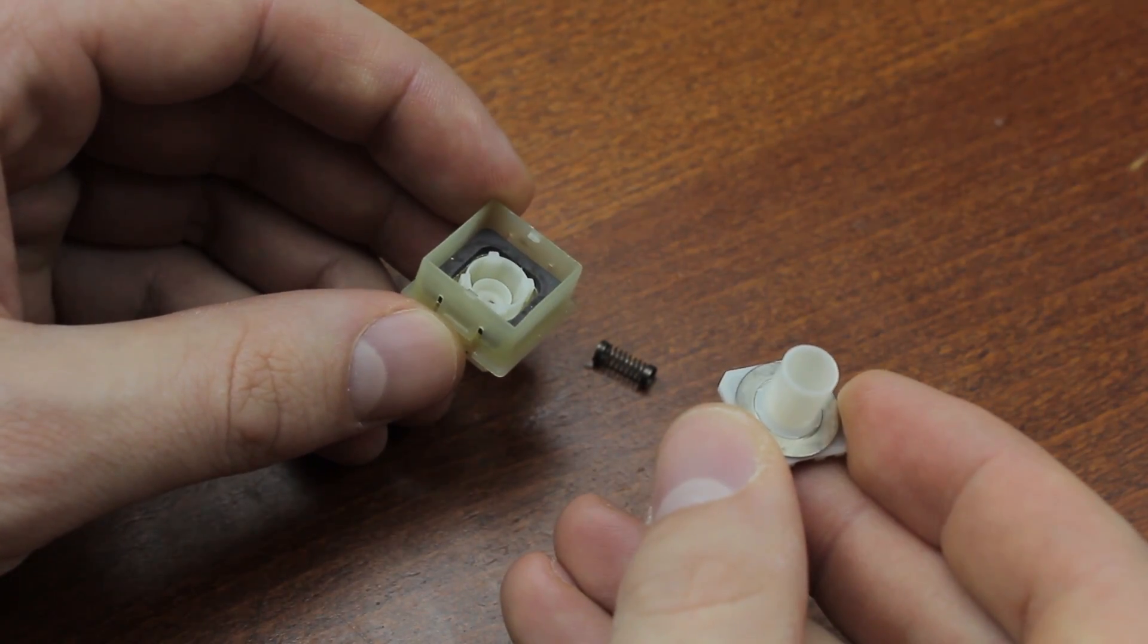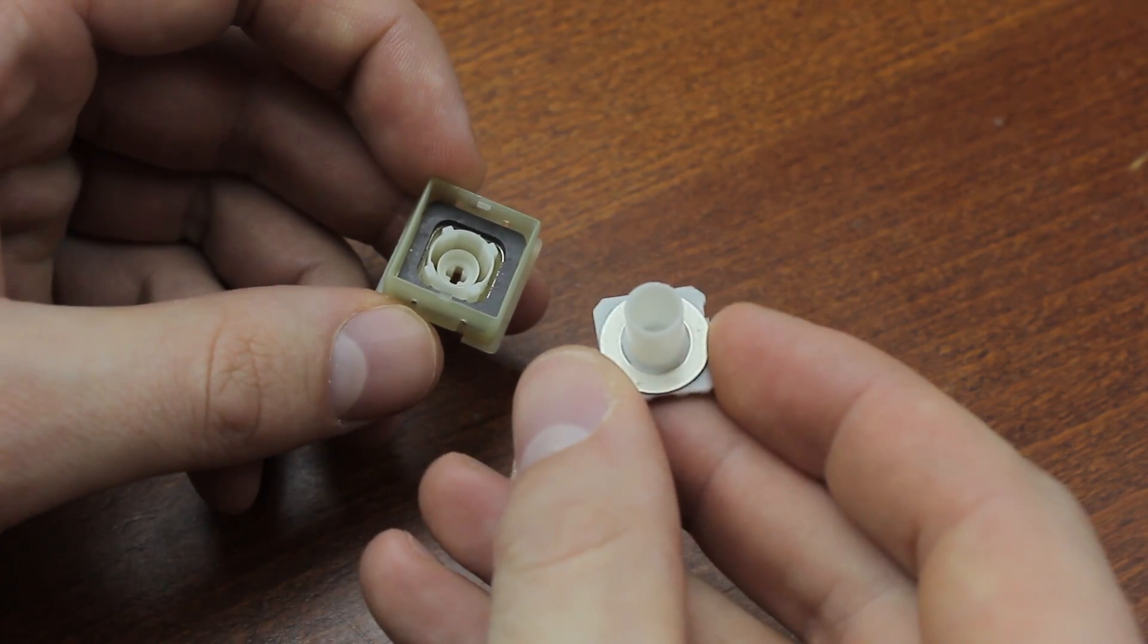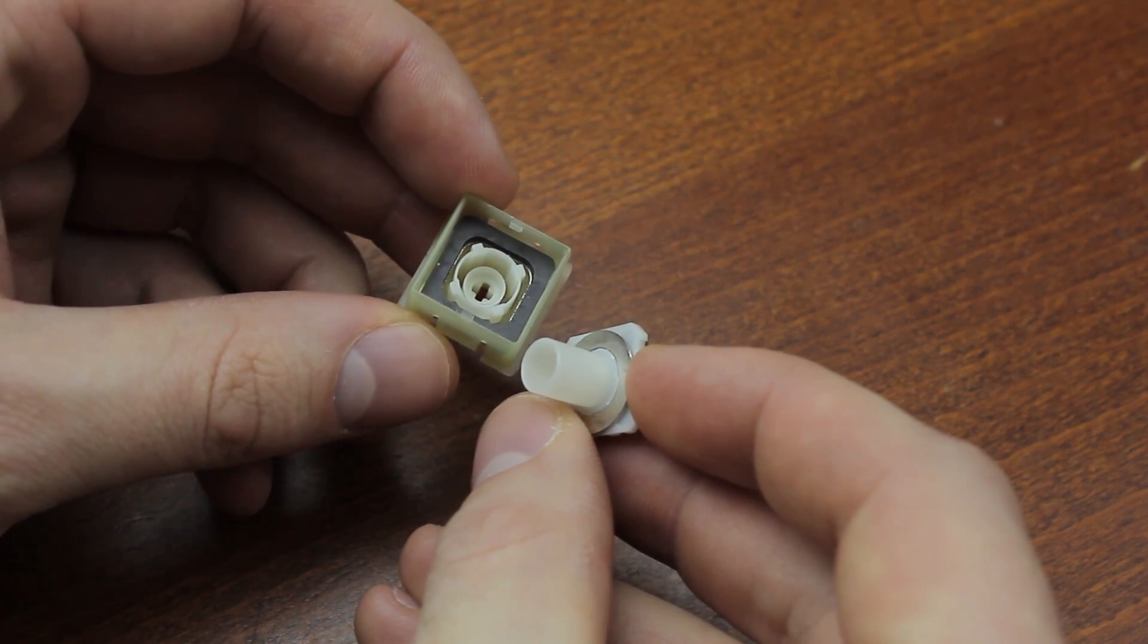The slider itself is two part, with a coil spring between the two parts, and it has a steel ring anchored to the top of the bottom part. This steel ring is what the magnet gets attracted to.